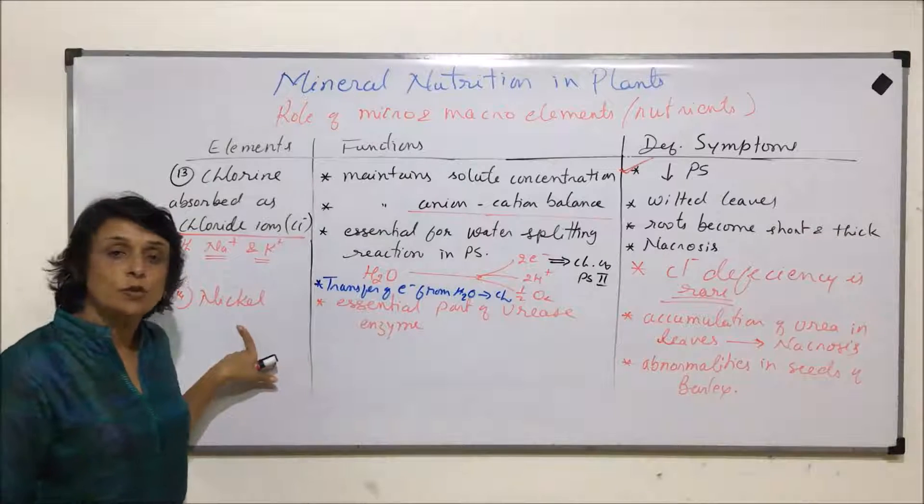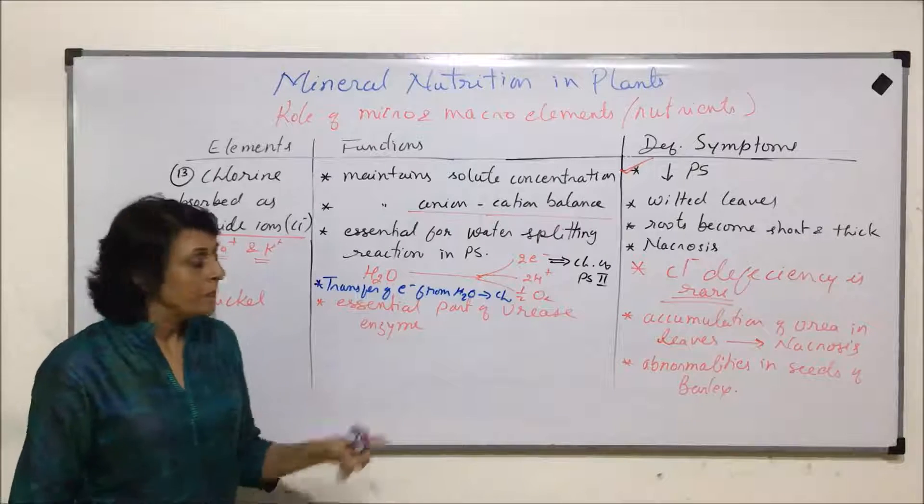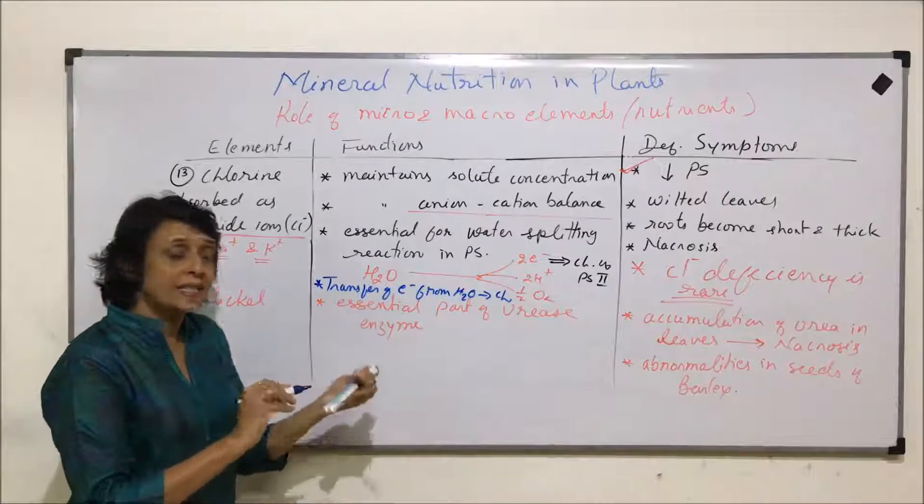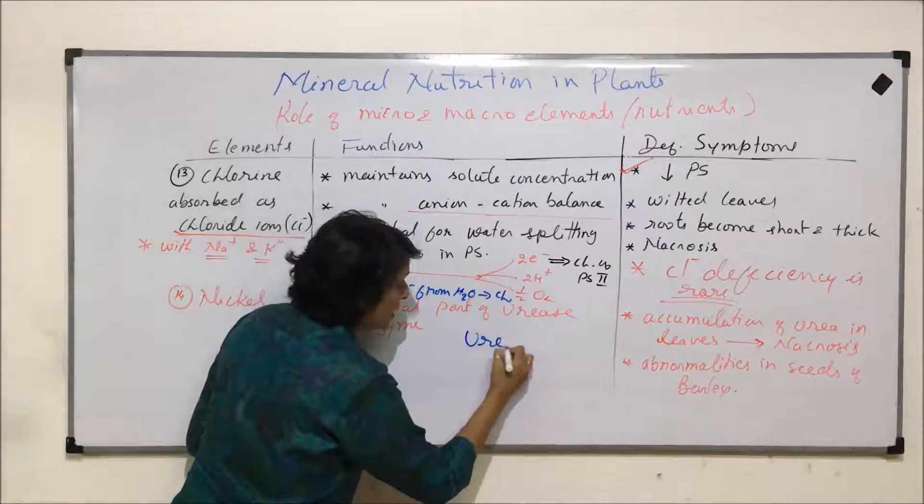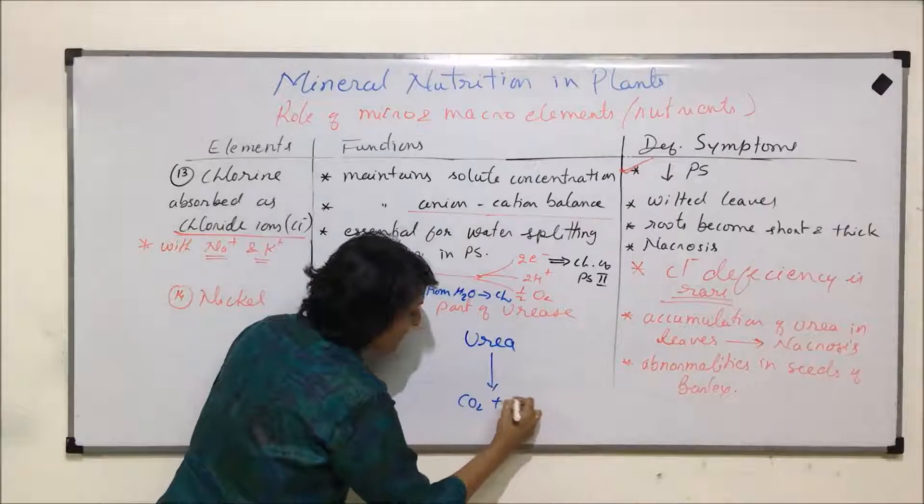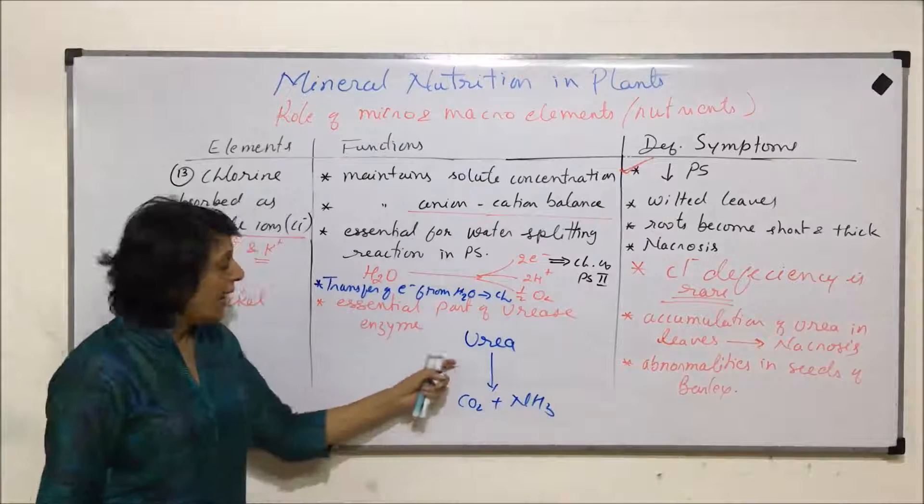The last element that we are talking of is nickel, and it is essential part of urease enzyme. Urease enzyme is required to break down urea into carbon dioxide and ammonia.